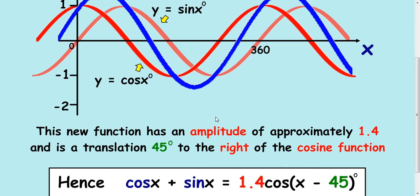What the actual formula of this wave is: 1.4 cos(x - 45). So when you add these two waves together, a cos and a sine...